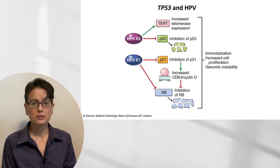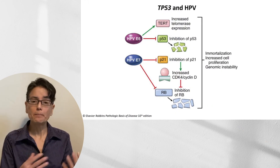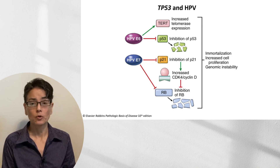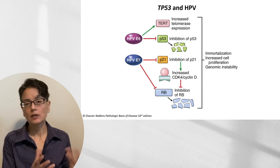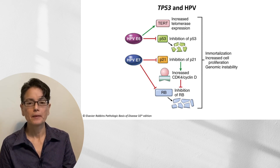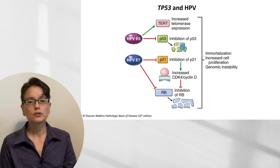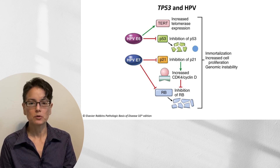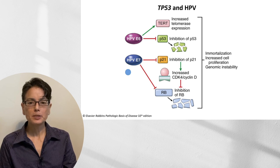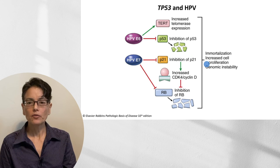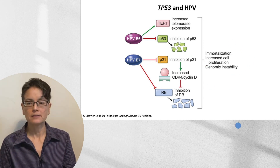To finish the discussion of P53, let's go back to HPV, which plays a role in carcinogenesis. Now that we've gone through the whole pathway: HPV E6 protein can bind to P53 and cause it to break down, preventing P53 from having its usual function. The HPV E7 protein actually inhibits P21. So both of these are going to result in immortalization, increased cell proliferation, and genomic instability.